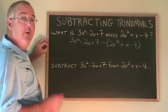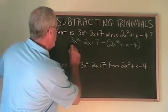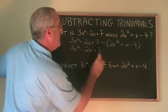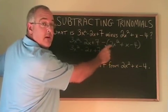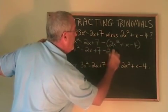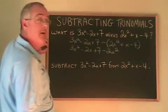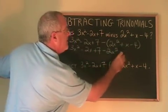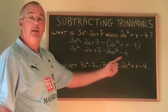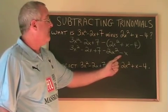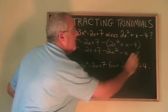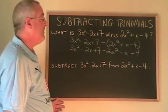Then, as a separate step, we remove the bracket. Minus 2x squared means minus 2x squared. That's obvious. But, minus positive x means minus x. It looks like this sign has flipped. And, minus negative 4 means plus 4. It also looks like that sign has flipped.